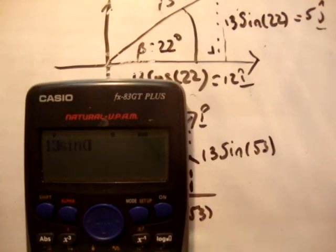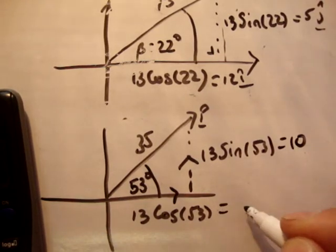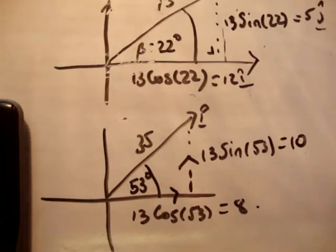So 13 sine of 53 is equal to 10. 13 times the cosine of 53 is equal to 8. 10 and 8. It's 10 and 8. And it should be 4 and 3. No, that's correct. 10 and 8. That's equal to 10 and that's equal to 8. Having a bit of an off day today, I'm sorry about that now. So look, I'm going to plow on and see if we can get this correct.